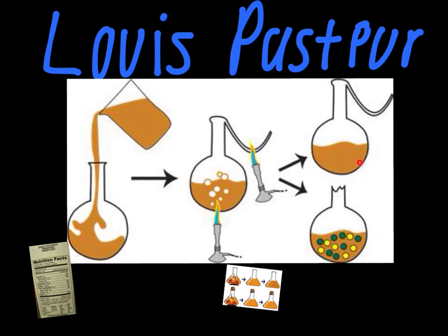Pasteur was able to definitively show that spontaneous generation does not happen. If it did, it would have happened in this flask. Those things were not spontaneously generating — they were coming from living things already present in the air around it, microorganisms in the air around us all the time, riding on dust particles. Pasteur was able to get rid of that point of criticism that Spalanzani faced and show definitively that spontaneous generation does not occur.